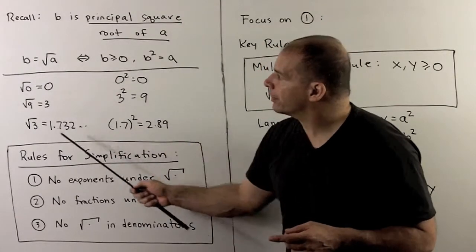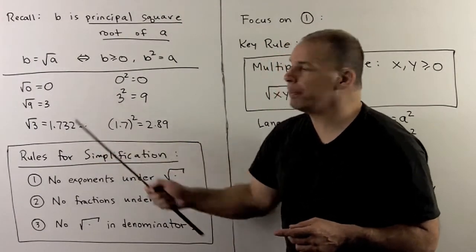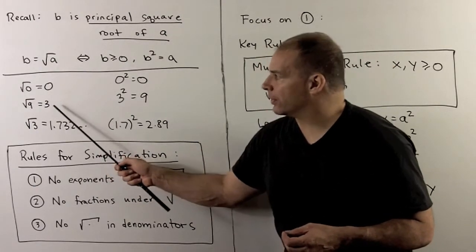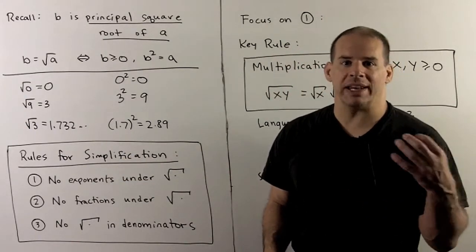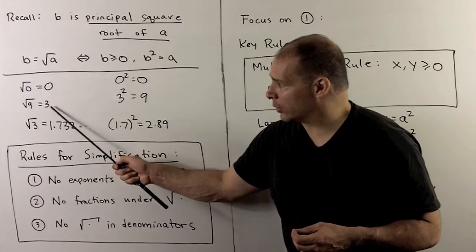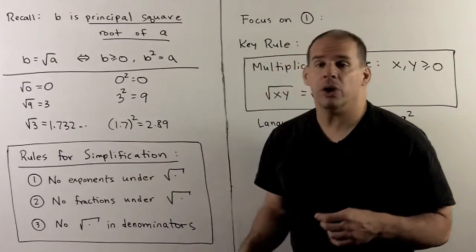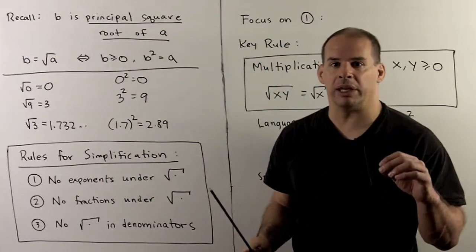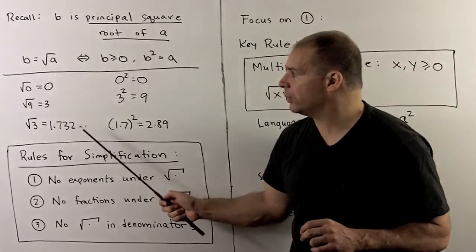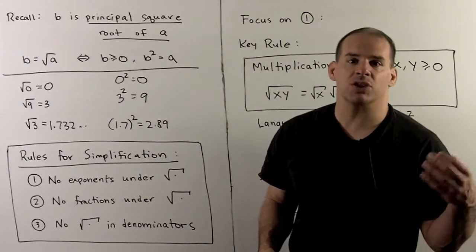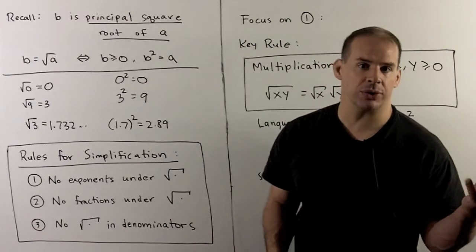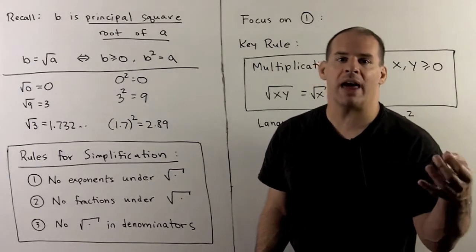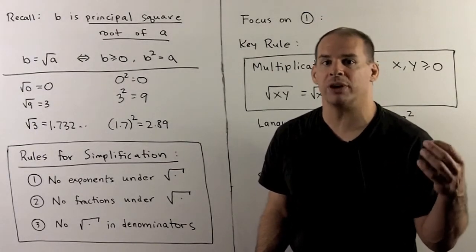For some examples: the square root of zero is equal to zero, since zero squared gives zero back. Square root of nine is equal to three — three squared gives nine, and three is greater than or equal to zero. For the square root of three, this number goes on forever without a repeating pattern, starting with 1.732. If we take 1.7 and square it, we get 2.89, which is very close to three. Note: if we try to take the square root of a negative number, we call that undefined — there are no real square roots for negative numbers.